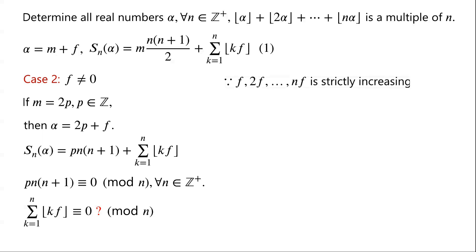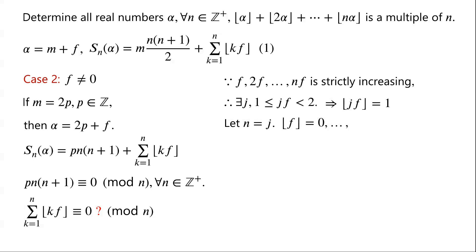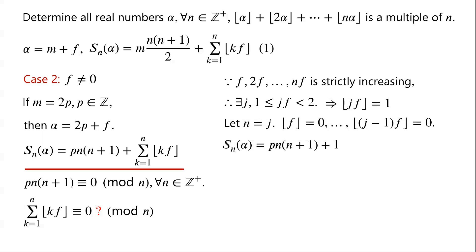Since f, 2f, ..., nf is strictly increasing and f > 0, there must exist j such that jf ≥ 1 and jf < 2. Then floor(jf) = 1. Setting n = j, we get floor(f) = floor(2f) = ... = floor((j-1)f) = 0, and floor(jf) = 1. Therefore S_n(α) = p·n(n+1) + 1, which is clearly not congruent to 0 modulo n. So α = 2p + f does not satisfy the condition.